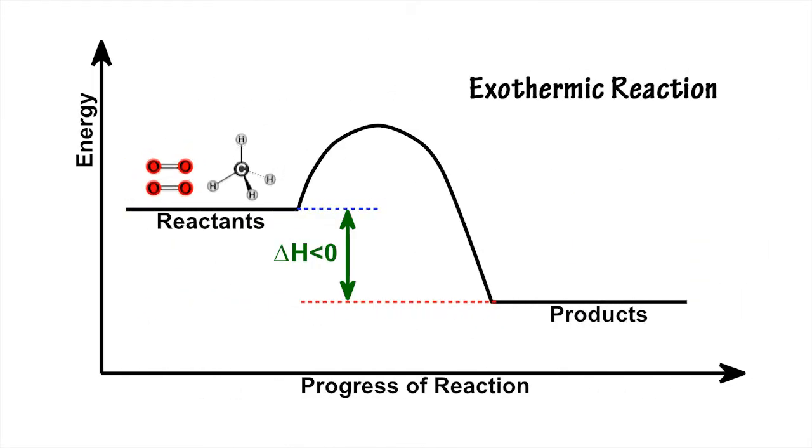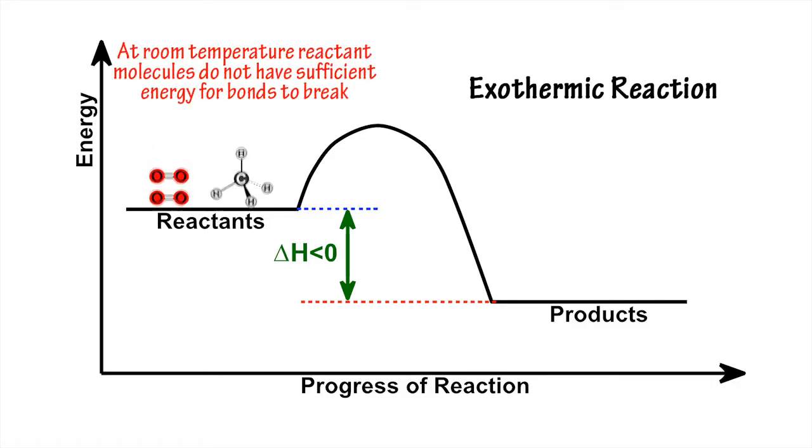Just because a chemical reaction is exothermic does not mean it will happen spontaneously when both reactants are present. For example, at room temperature, methane and oxygen do not spontaneously form carbon dioxide and water.